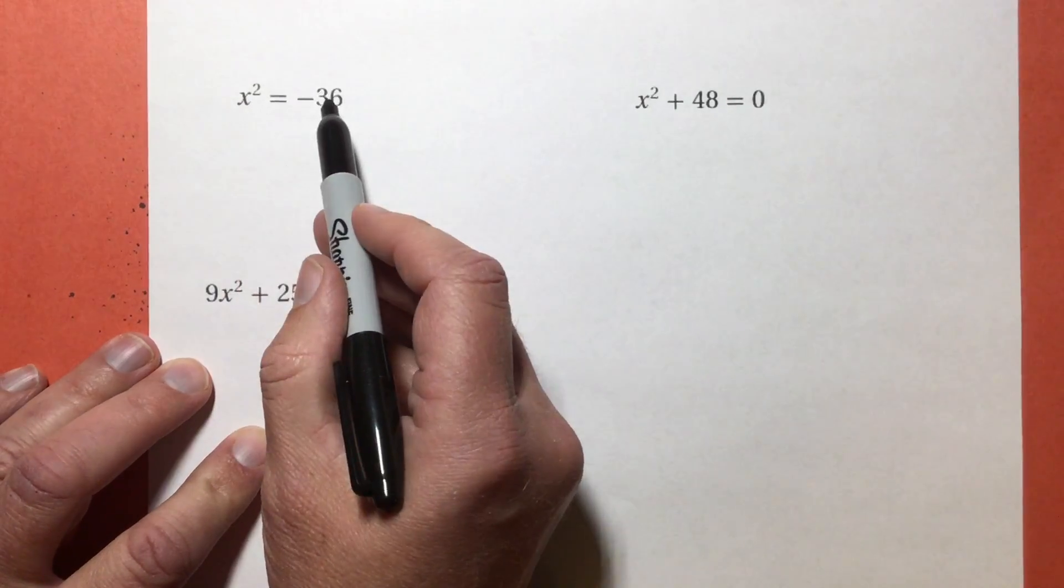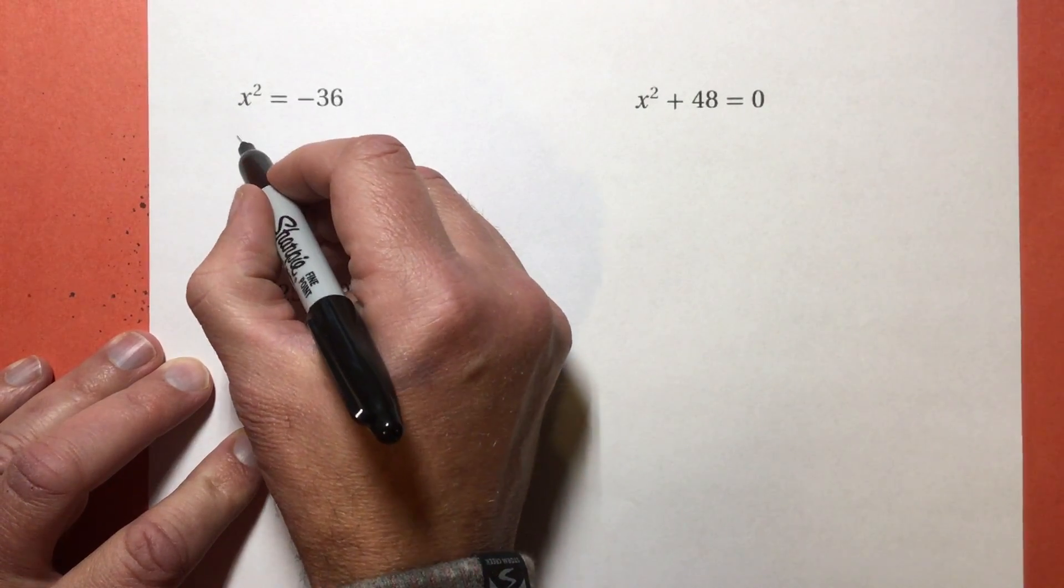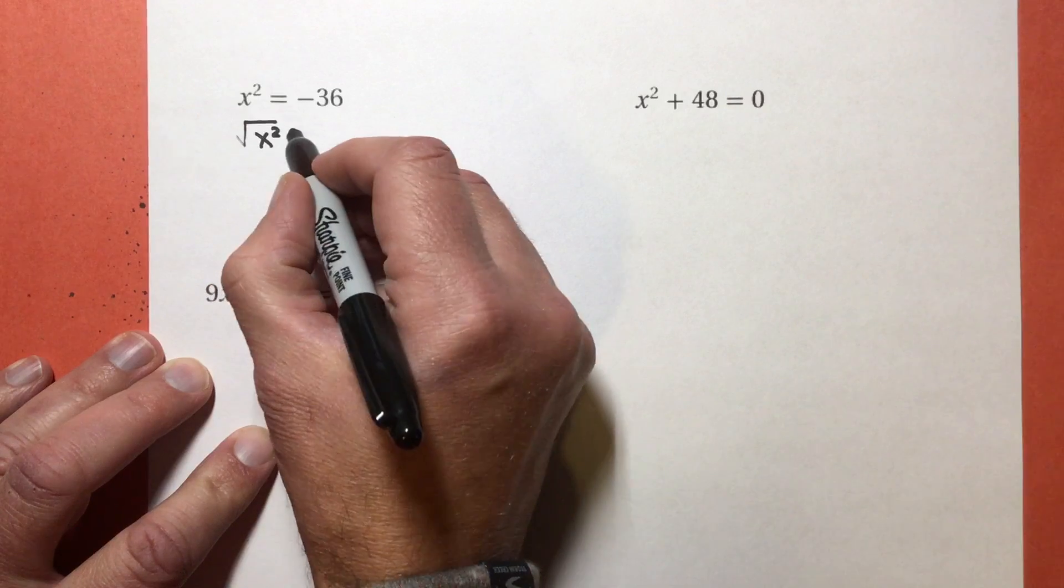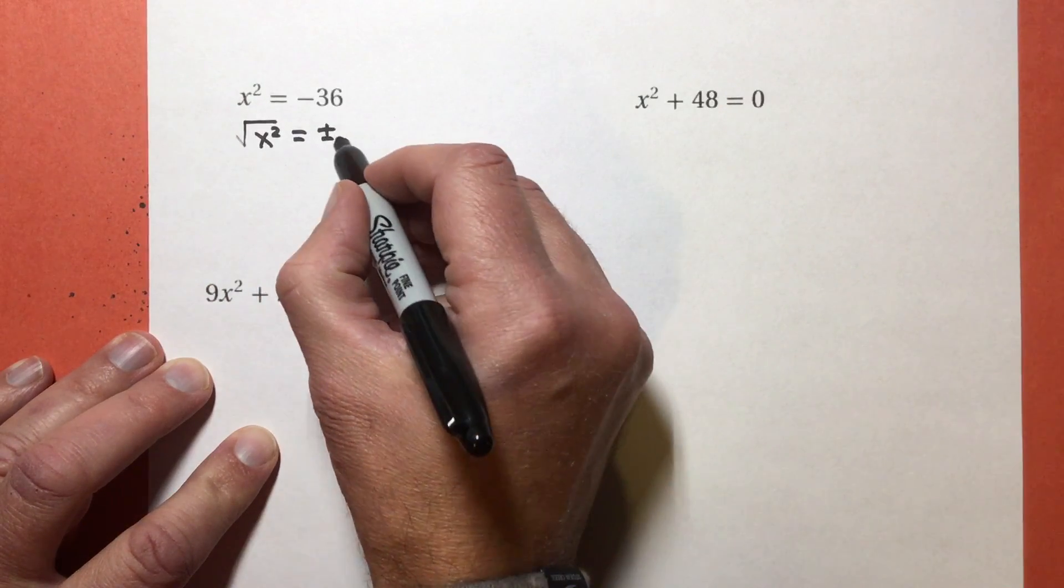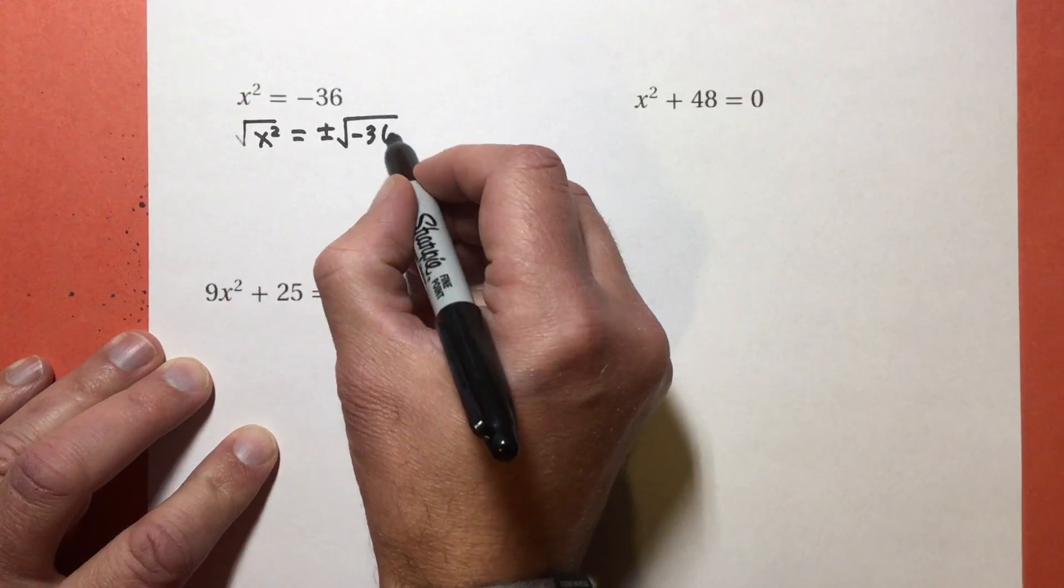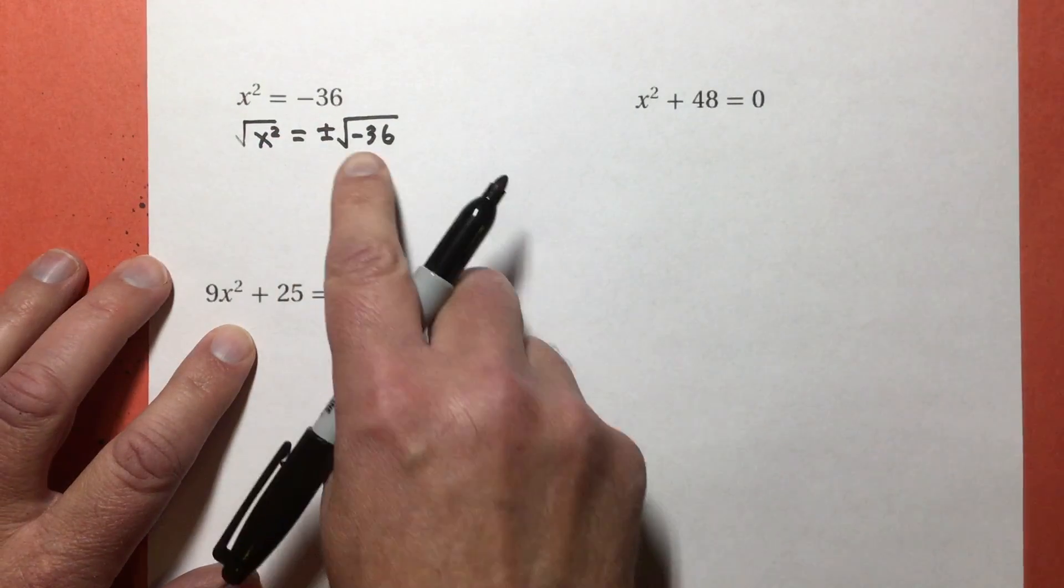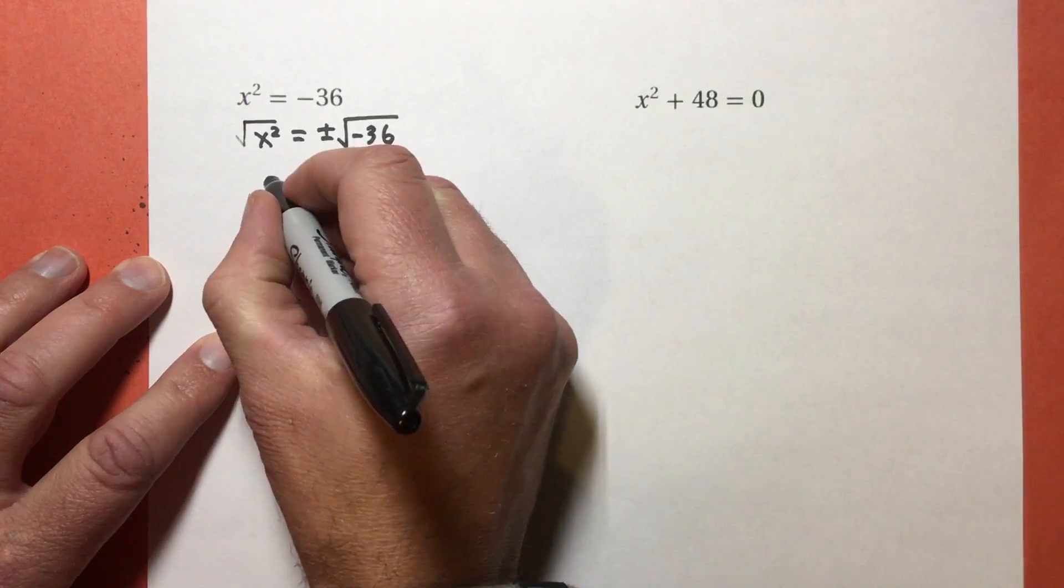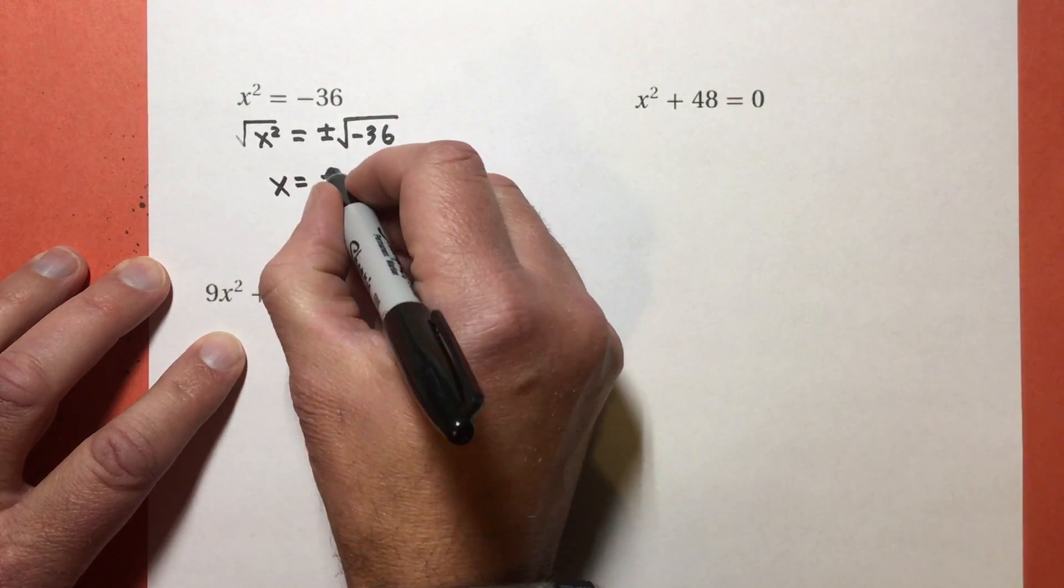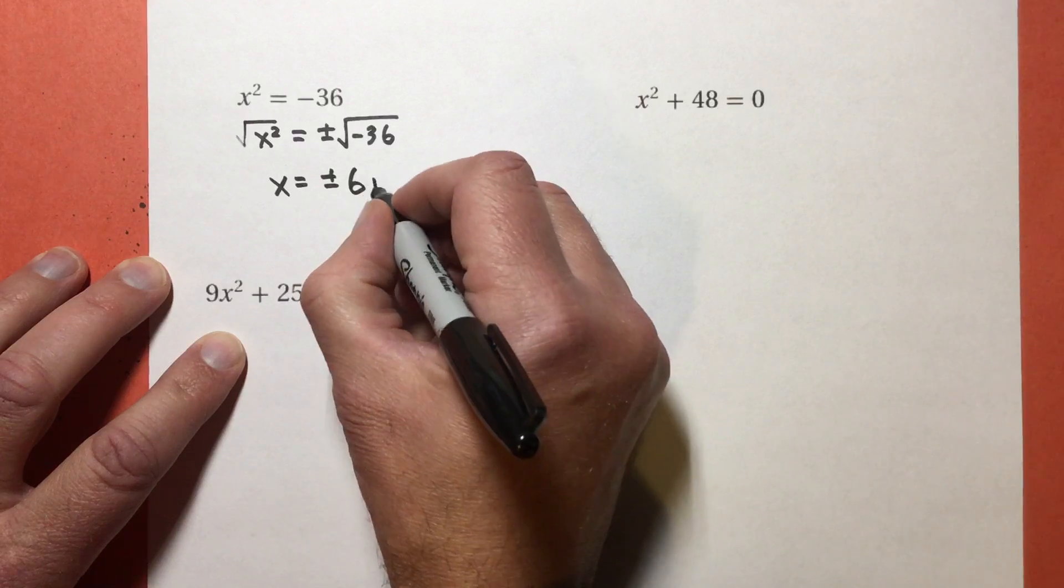x² = -36. If I take the square root of both sides, don't forget the plus or minus. The square root of 36 is 6. The square root of -1 is i. So I get x = ±6i.